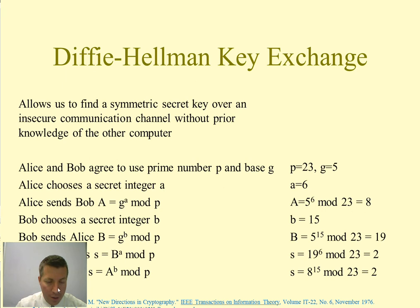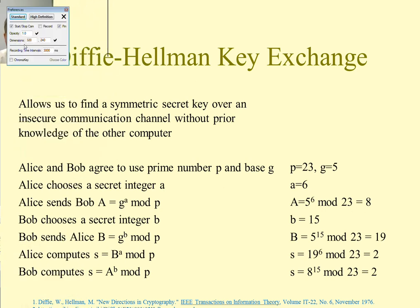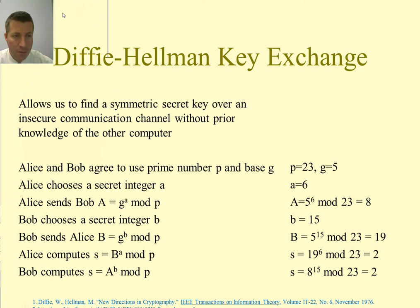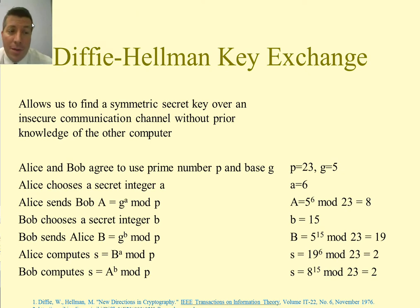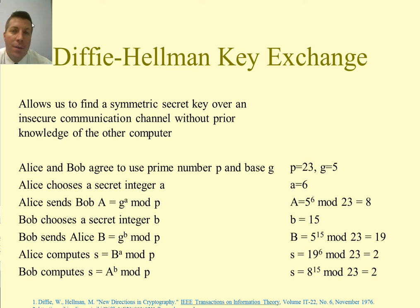Diffie and Hellman also came up with how to distribute and exchange keys. This is one of the problems with symmetric key algorithms, and we still have it with asymmetric algorithms. The Diffie-Hellman key exchange algorithm allows us to find a symmetric secret key over an insecure communication channel without prior knowledge of the other computer.